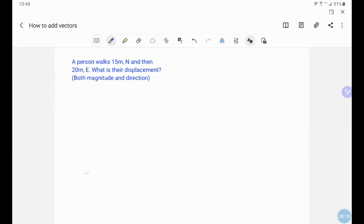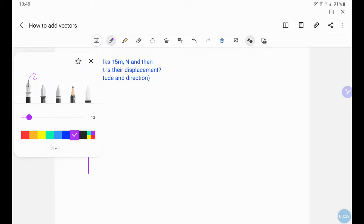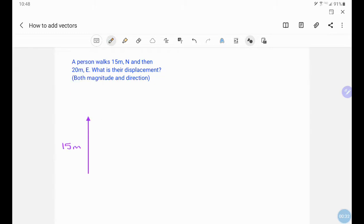So let's first draw our picture. Initially they walk 15 meters north. This is 15 meters. And then from there they're going to turn. They're going to walk 20 meters east. This is 20 meters.